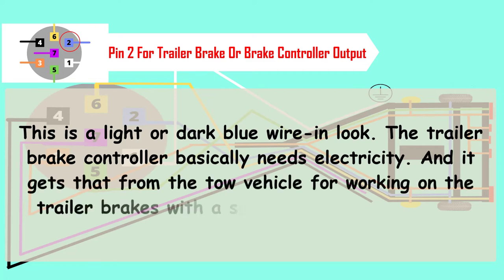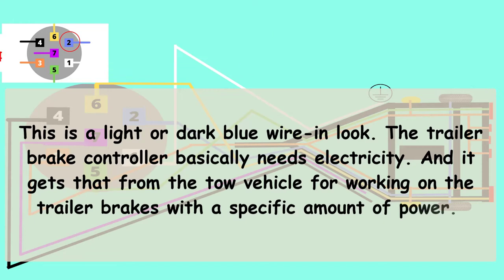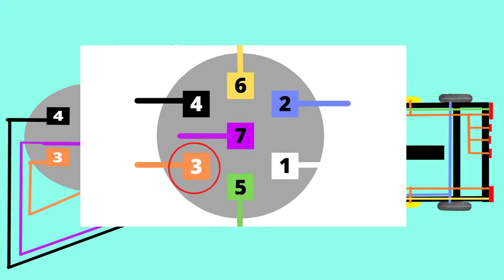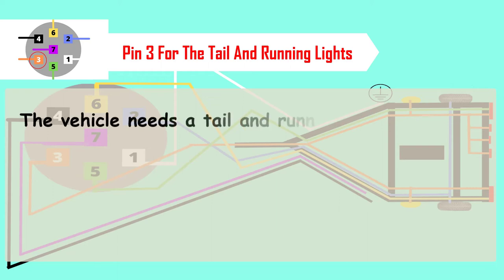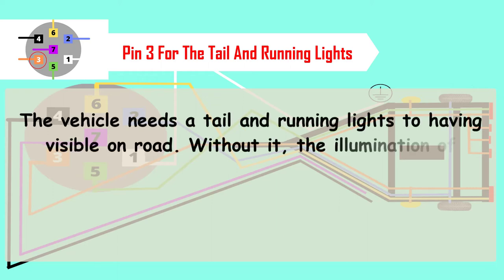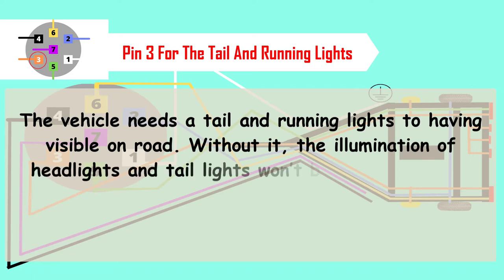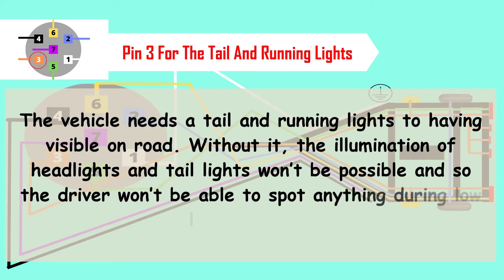Pin 3 is for the tail and running lights. The vehicle needs tail and running lights to be visible on road. Without it, the illumination of headlights and tail lights won't be possible and so the driver won't be able to spot anything during low light or night.